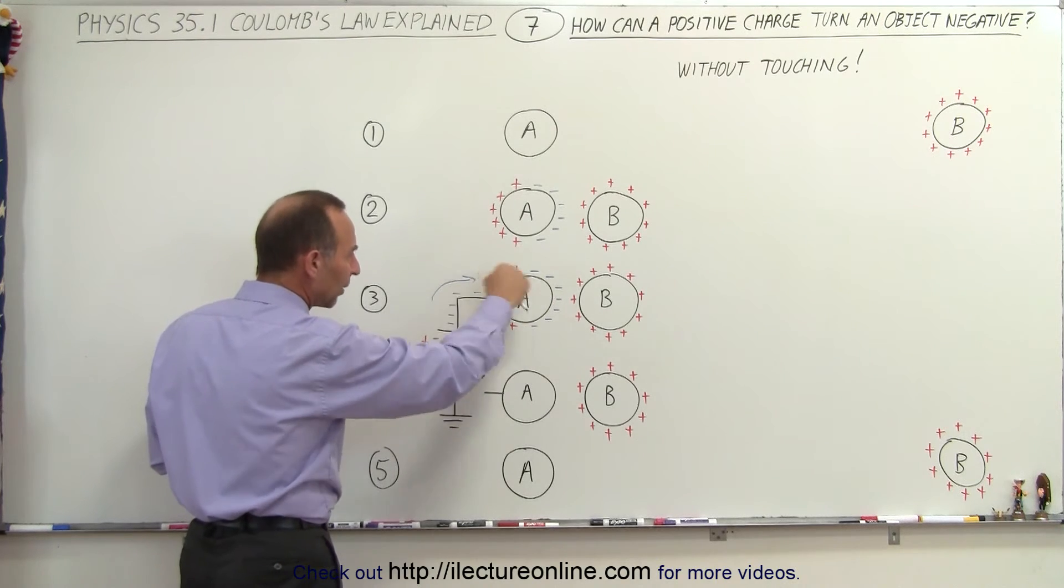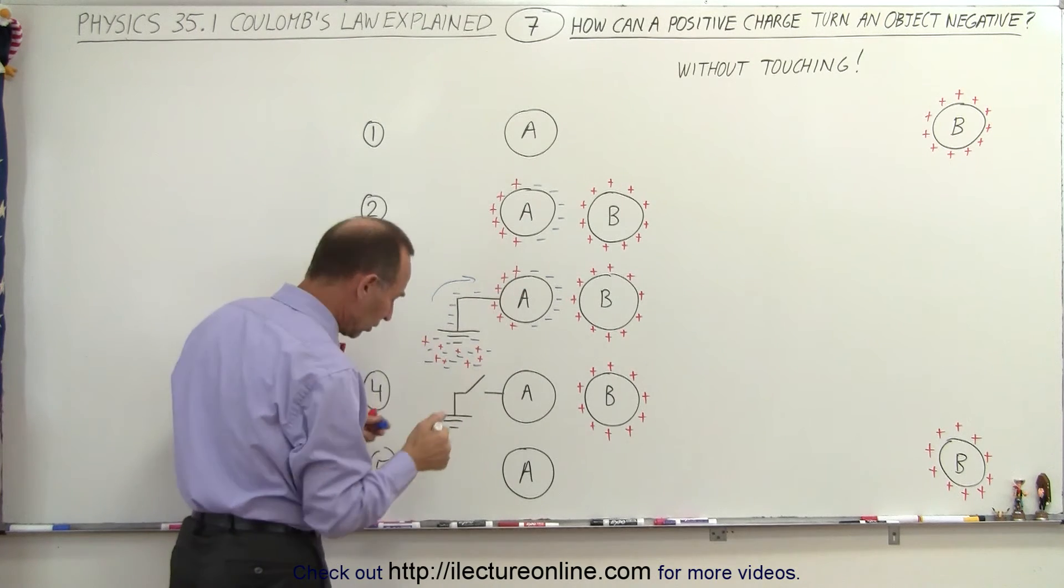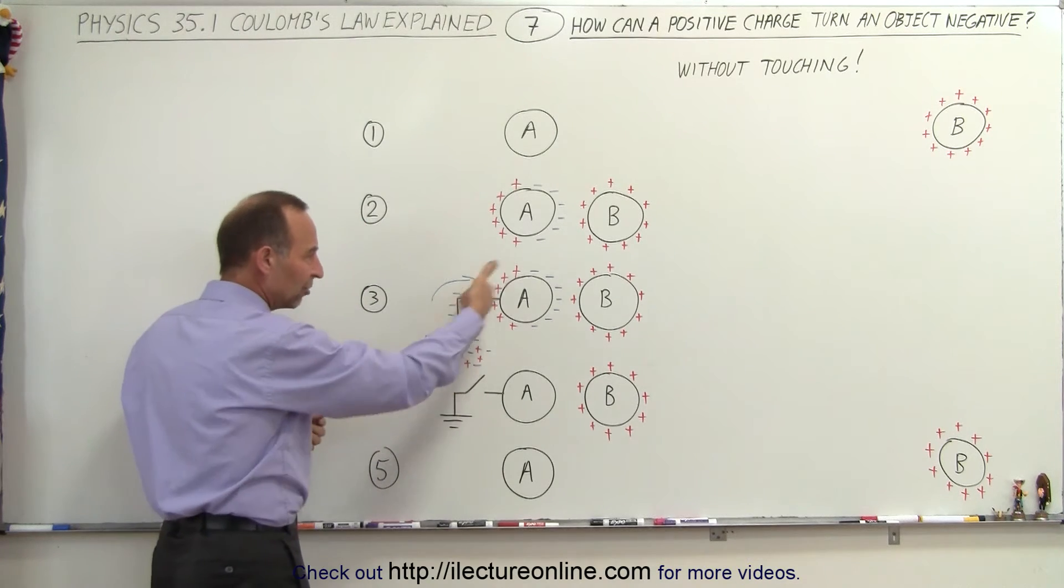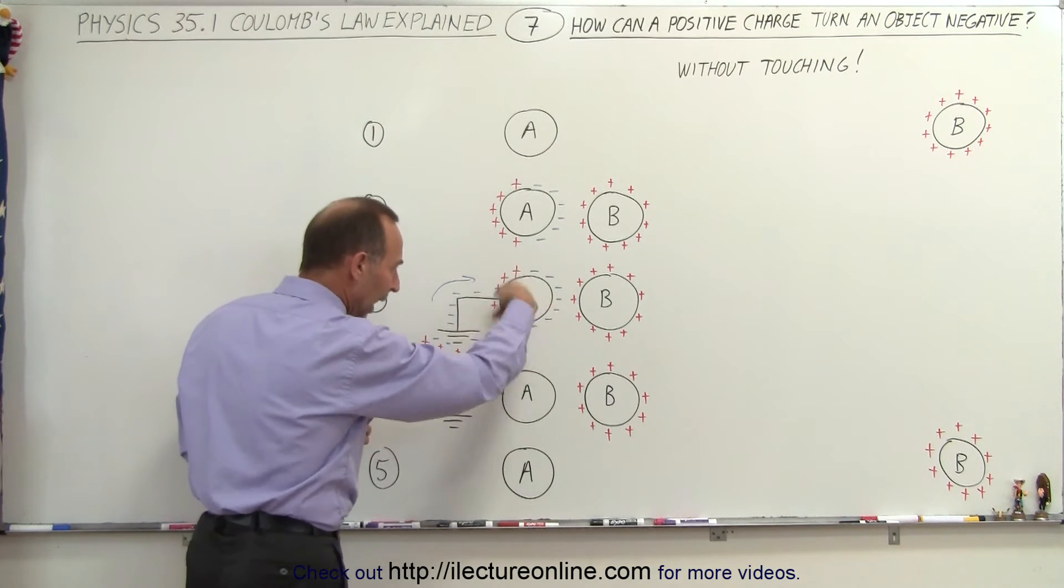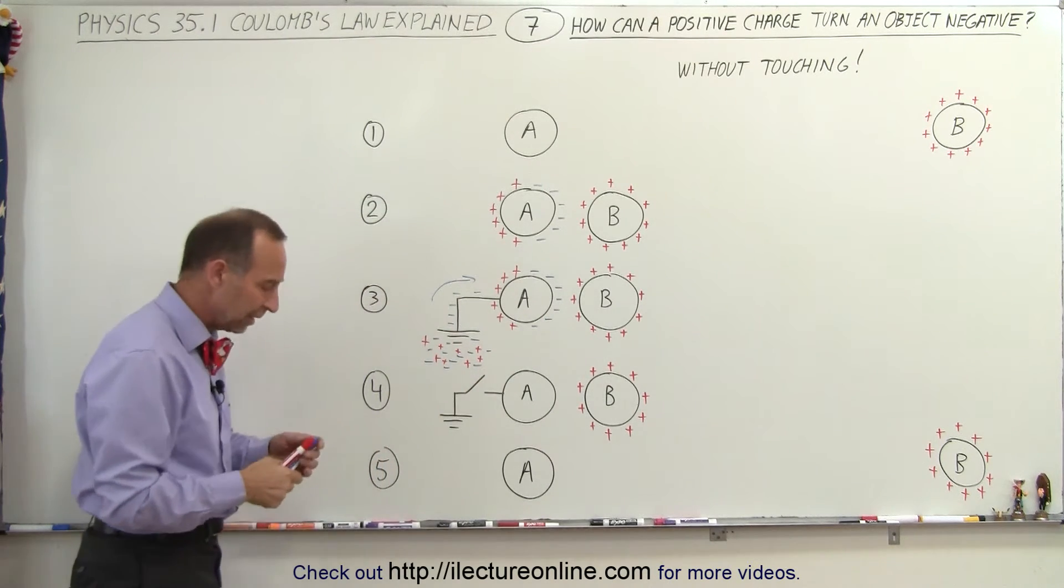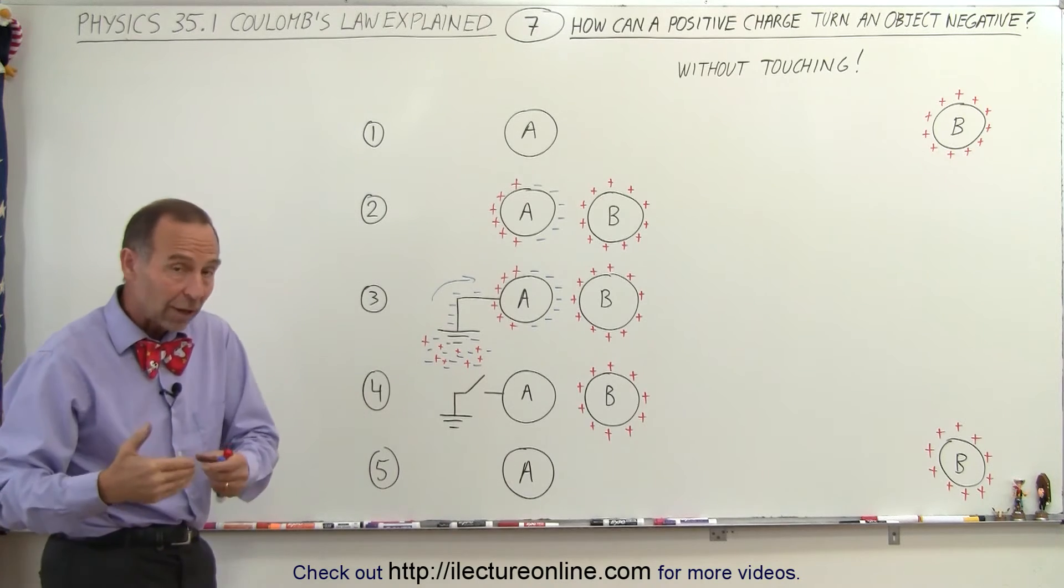These negative charges will pile up onto sphere A because they're attracted to these positive charges. At that point, after the number of these negative charges have flowed onto the sphere, you then break open the circuit so no more charges can come across this path,